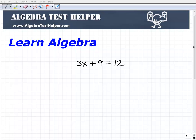The first thing I'm going to do is subtract 9 from both sides of the equation. And notice how I'm writing it just like this.